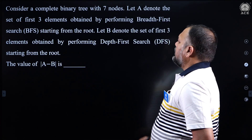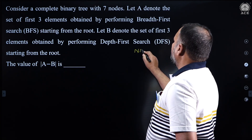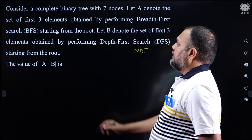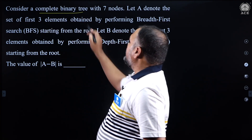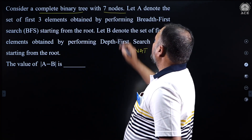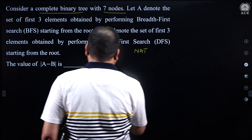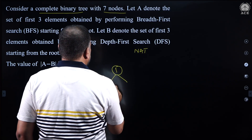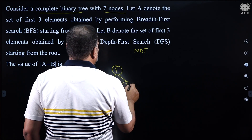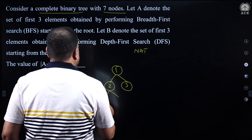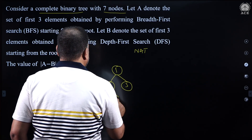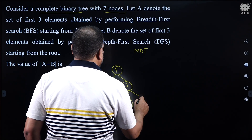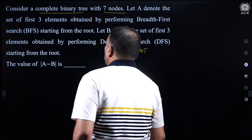Now look at this — this is also a very simple NAT question. Consider a complete binary tree with 7 nodes. How will the tree look with 7 nodes complete? We have nodes 1, 2, 3, 4, 5, 6, 7 — a complete binary tree.